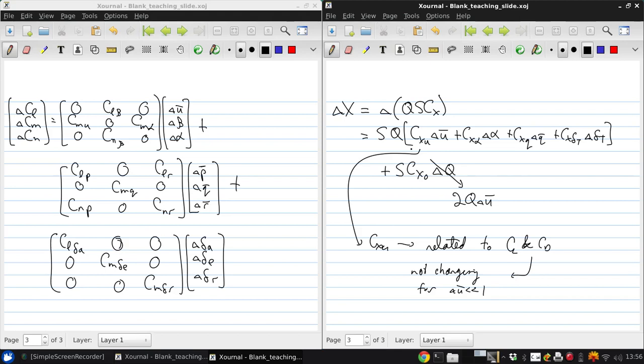So we can then write, we basically drop this term and say that delta X is approximately QS times 2 CX naught delta U plus CX delta alpha plus CX Q delta Q bar plus CX delta T delta delta T.